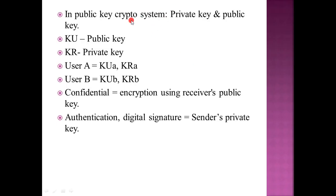Public key cryptosystem uses two keys: private key and public key. The public key is denoted as KU, and the private key is denoted as KR. User A has two keys: the public key denoted as KU-A and the private key denoted as KR-A.